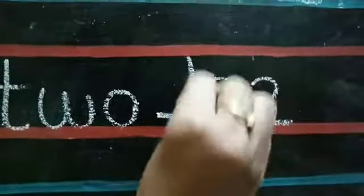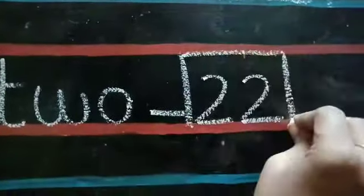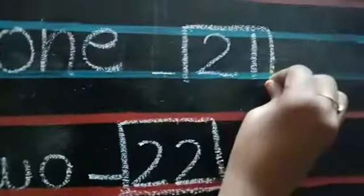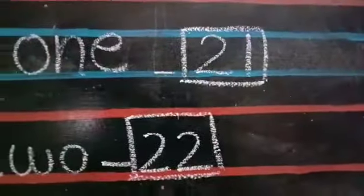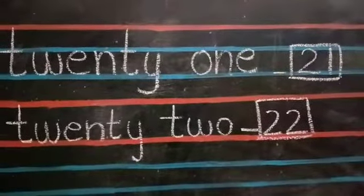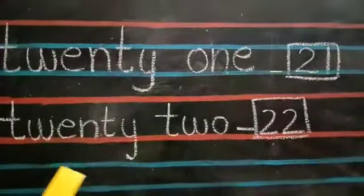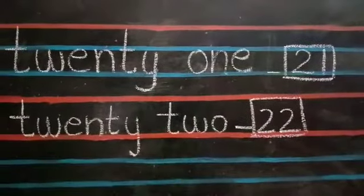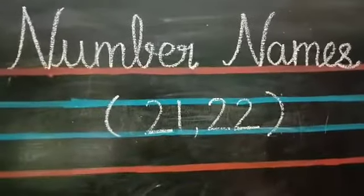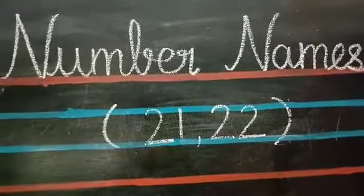This numeral 22 you should write in only one box. I hope you all understood how to write number names 21 and 22. Now open your number work notebook and write the number names 21 and 22 correctly. Thank you children.